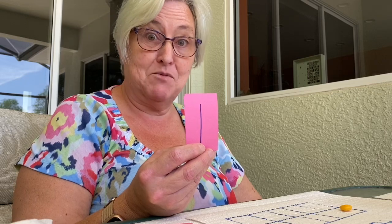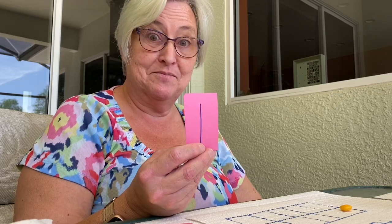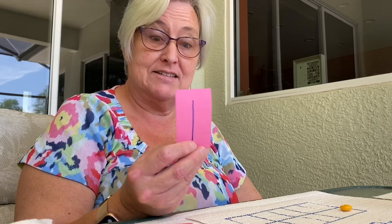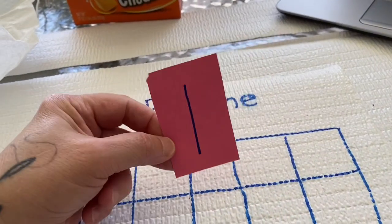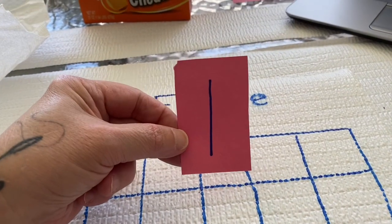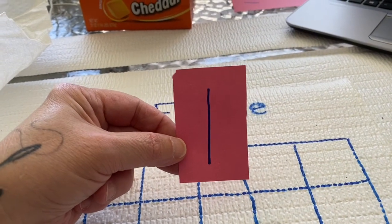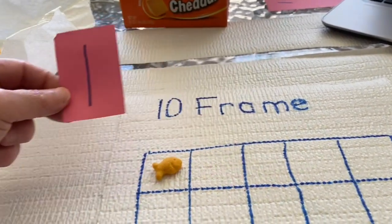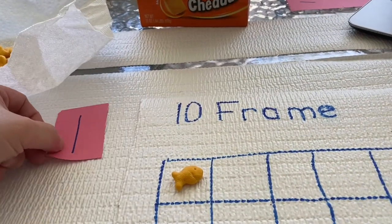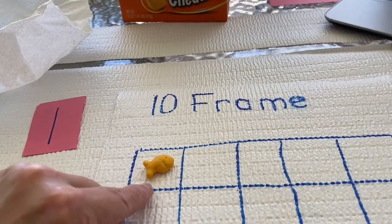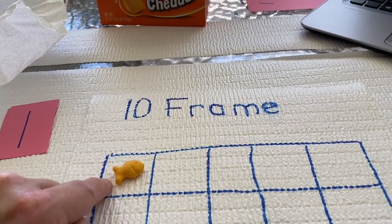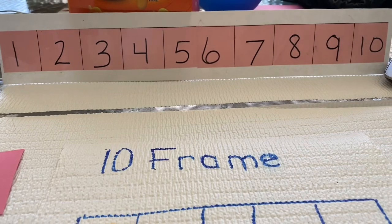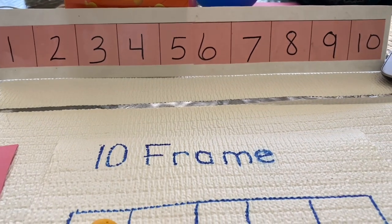One. This is the number one. So I'm going to take one goldfish and put it in my 10 frame. Want to play the game with me? Great, let's get started. This shows the number one. I'm going to lay the number one down, and I put one goldfish on my 10 frame.